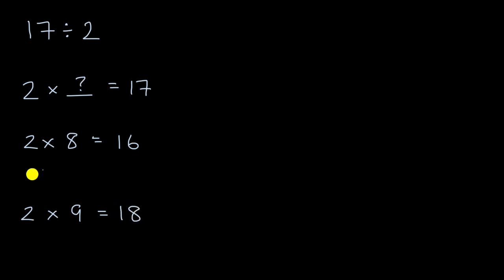And so this question mark, 2 times question mark is equal to 17. This helps us know that our question mark, our unknown value here, is going to be between 8 and 9. It is going to be 8 point something. So let's do another example.